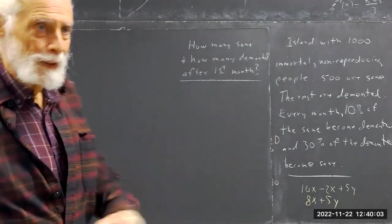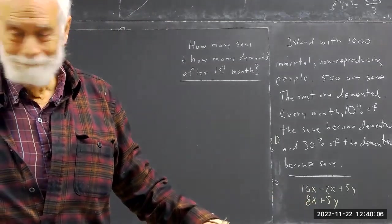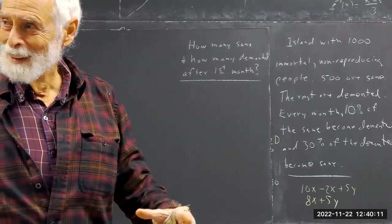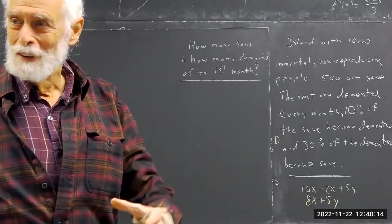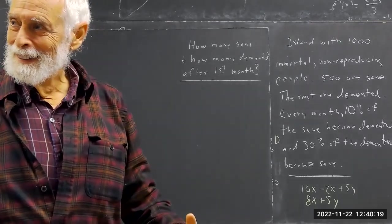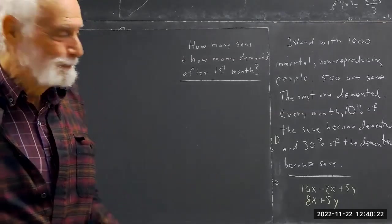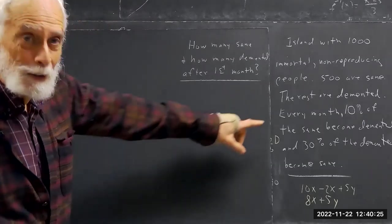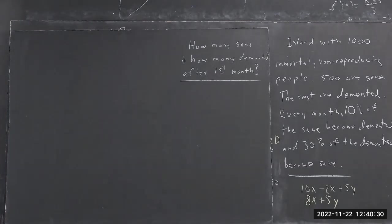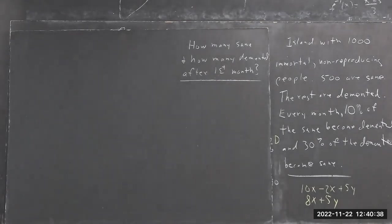The rest of you don't know what a transition matrix is yet — but after today, only sane people will know it. So just calculate the numbers: how many sane and how many demented are you going to have after the first month, if 10% of the sane become demented and 30% of the demented become sane?